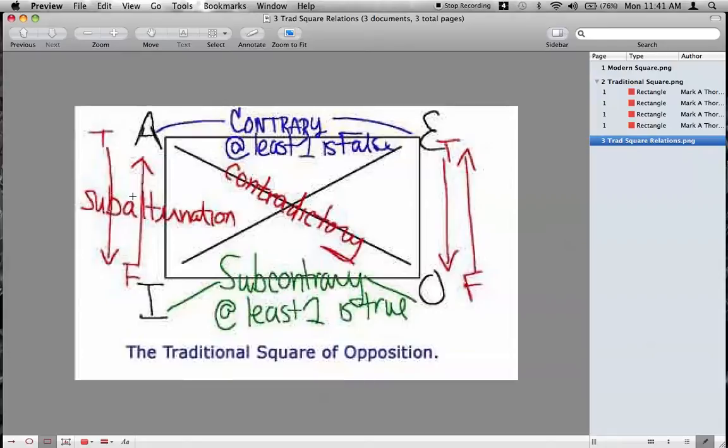So, the conclusion of that immediate inference was that it's false that no Swiss watches are true works of art. Now, that's an E proposition. So, that means it has a contrary relationship. But this is actually what exactly the conclusion says, is that it's false, that one of them is true and the other one is false, because they can't both be true. So, therefore, we can say that that immediate inference argument is actually valid.